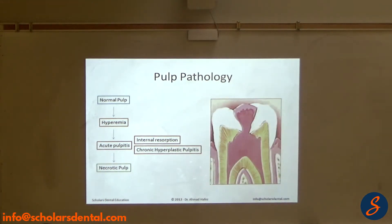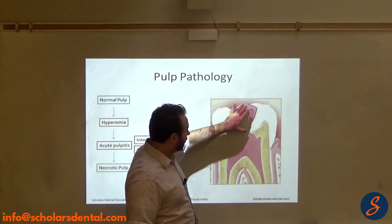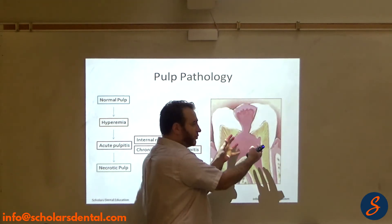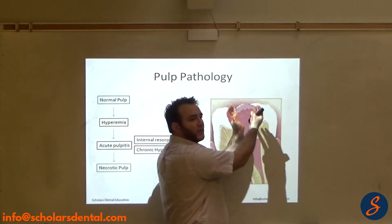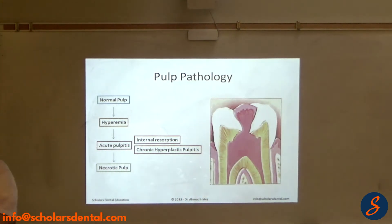Another thing that could happen is chronic hyperplastic pulpitis, which means that there's actually a big enough hole in the tooth that allows the pressure of the pulp to react outward and create a granuloma. Because connective tissue at the end — it's like creating something — it has somewhere to relieve its pressure: that cavity in the tooth.